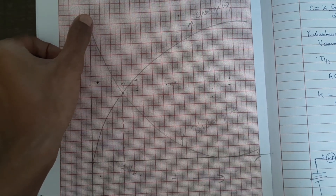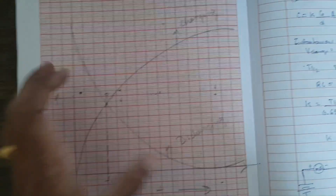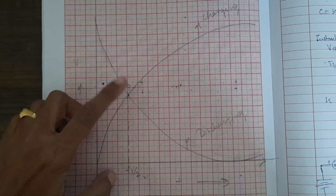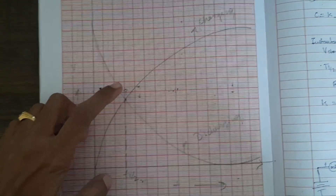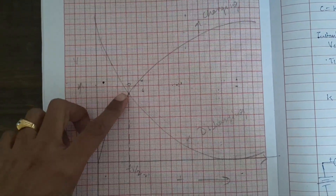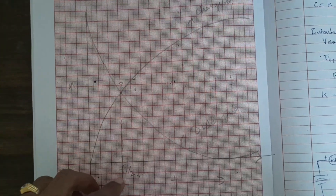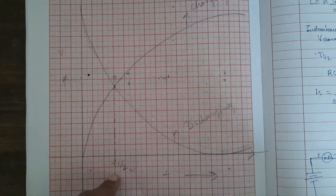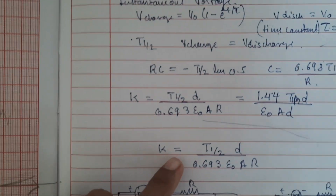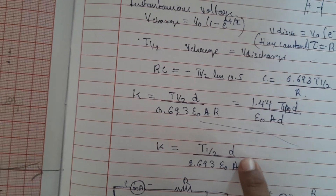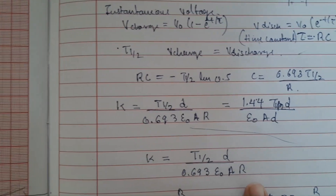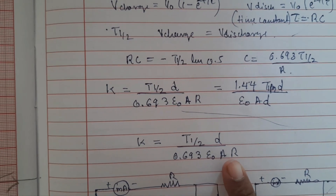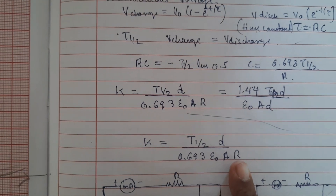At a certain time, the charging and discharging curves of the condenser intersect — that time is called the t-half value. With the help of this t-half you can calculate the dielectric constant using the formula: k = t_half · d / (0.693 · ε · A · R). Put the value of t-half and calculate the dielectric constant of the capacitor from this charging and discharging experiment.